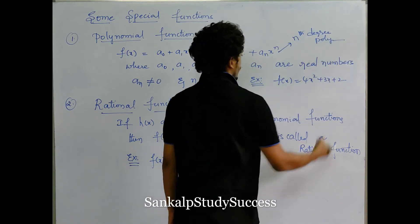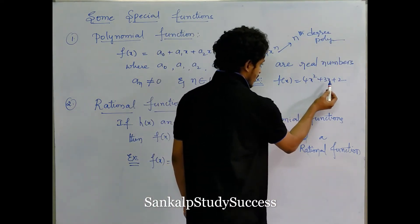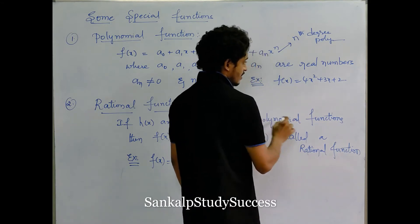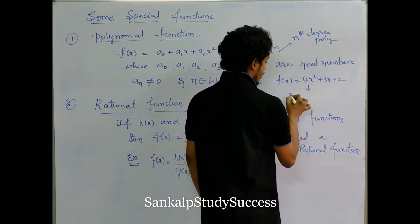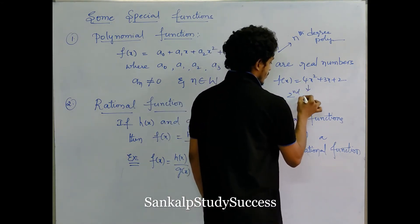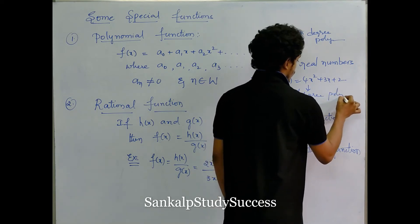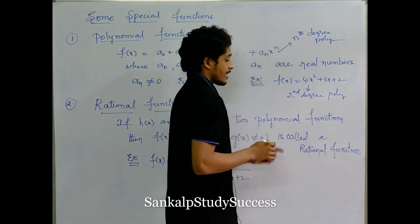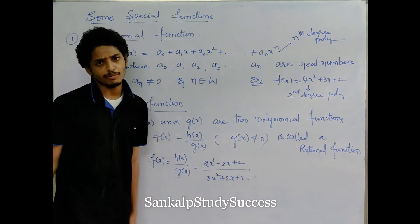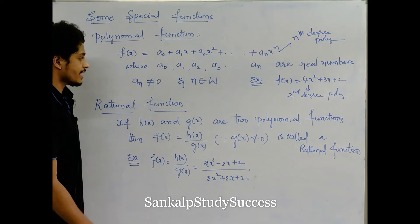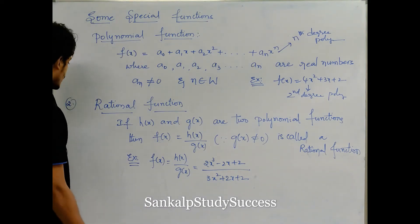So f of x equals 4x squared plus 3x plus 2 is an nth degree polynomial — specifically a second degree polynomial. If it starts with x cube, then it goes to a third degree polynomial. These are called polynomial functions.